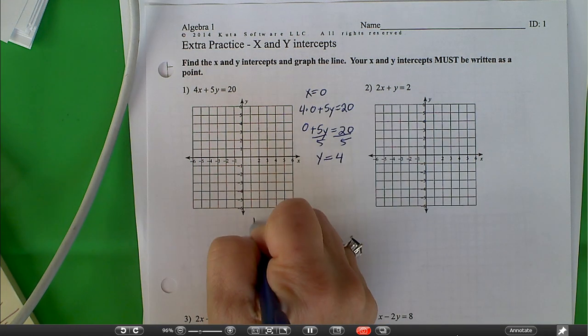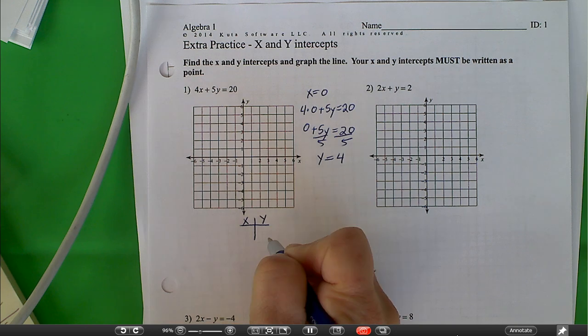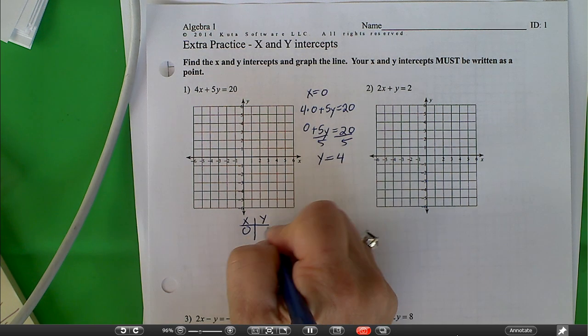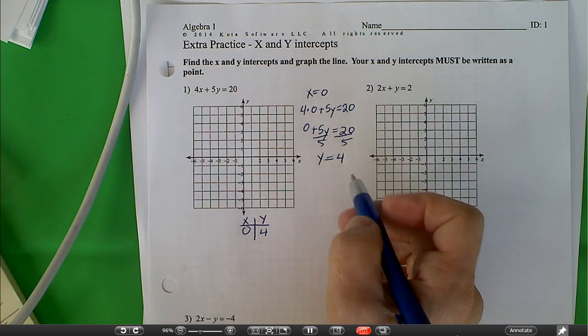So we're going to create a table. I have x and y. I have x is equal to 0, y is equal to 4. That was the bell, but I'm going to finish this.